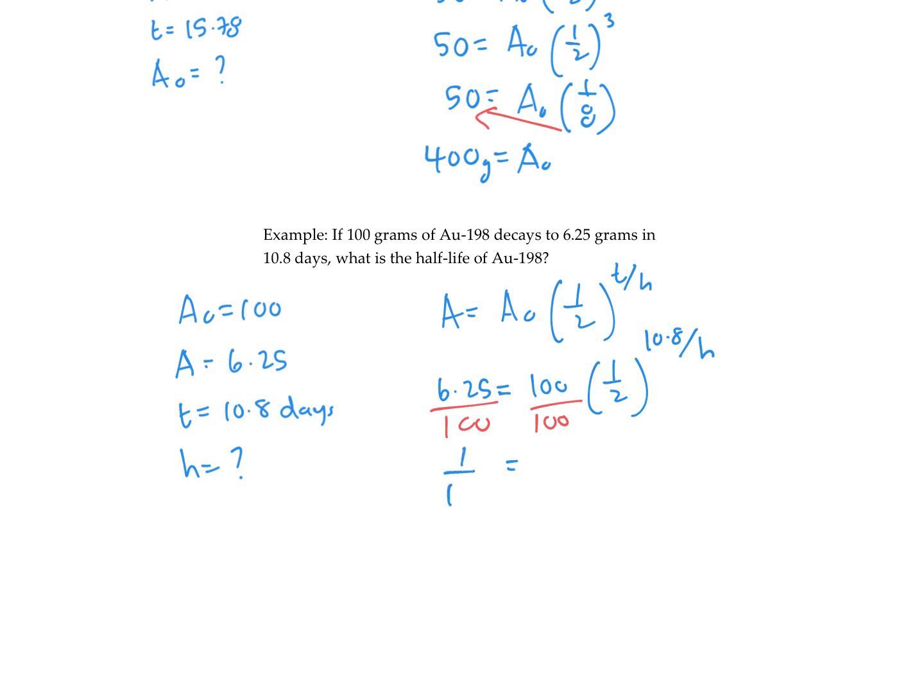So it would be 1 over 16 reduced as a fraction. And that makes it easier to solve. Because I know 1 over 16 is a multiple of a half. I know 2 to the power of 4 equals 16. So 1 half to the power of 4 would equal 1 over 16.